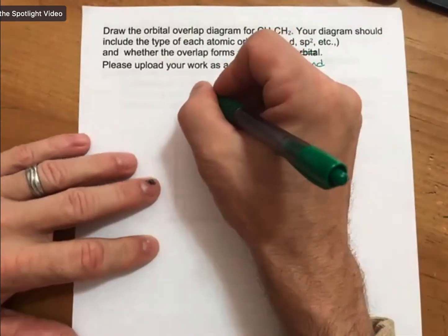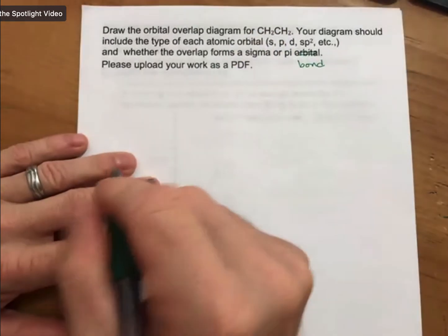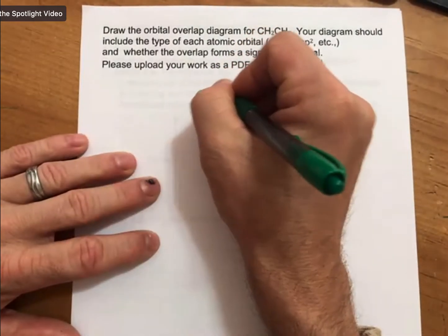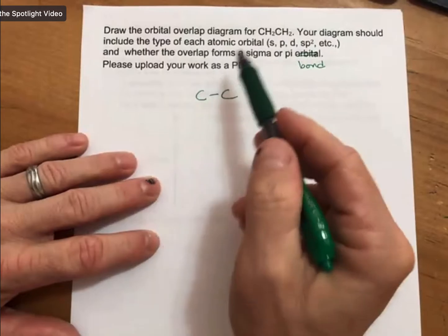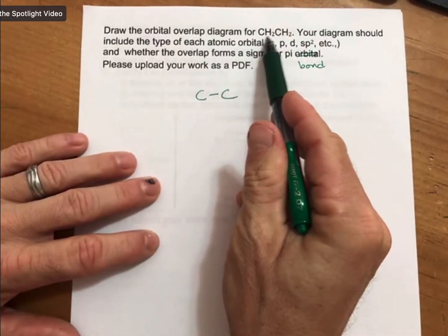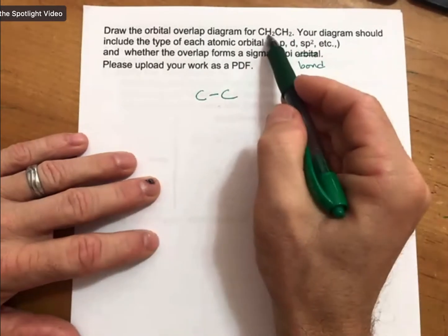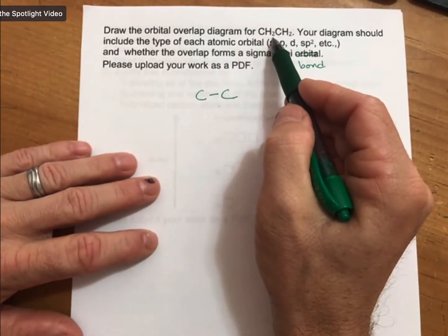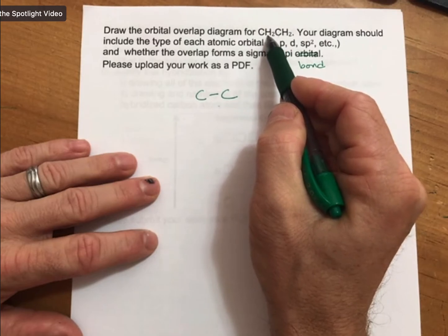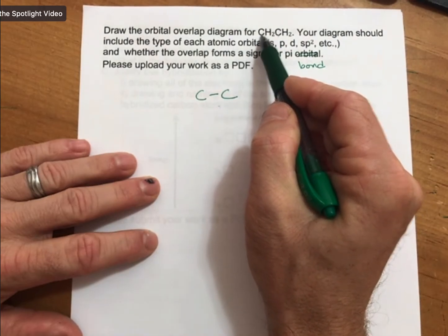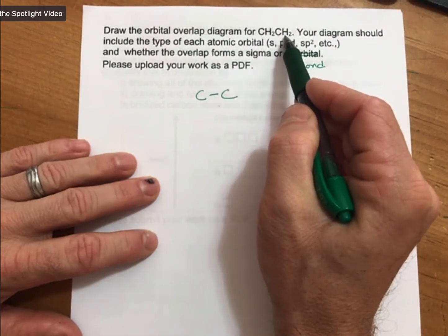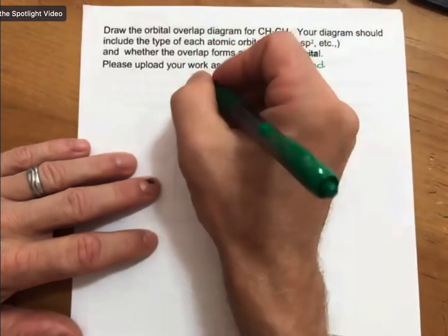Okay, so first thing we start with is Lewis structure, and any time you have more than one carbon, join the carbons together. And then this formula is trying to tell us that there are two hydrogens bonded to this carbon and two hydrogens bonded to this carbon, so let's do that.